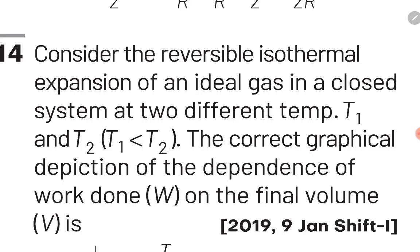The fifth question: consider the reversible isothermal expansion of an ideal gas in a closed system at two different temperatures T1 and T2, where T2 > T1. What is the correct graphical depiction of work done versus final volume V? For a reversible isothermal process, W = −nRT ln(V2/V1). If we draw a graph of work done versus ln(V), it will be a straight line, and the slope will be nRT.